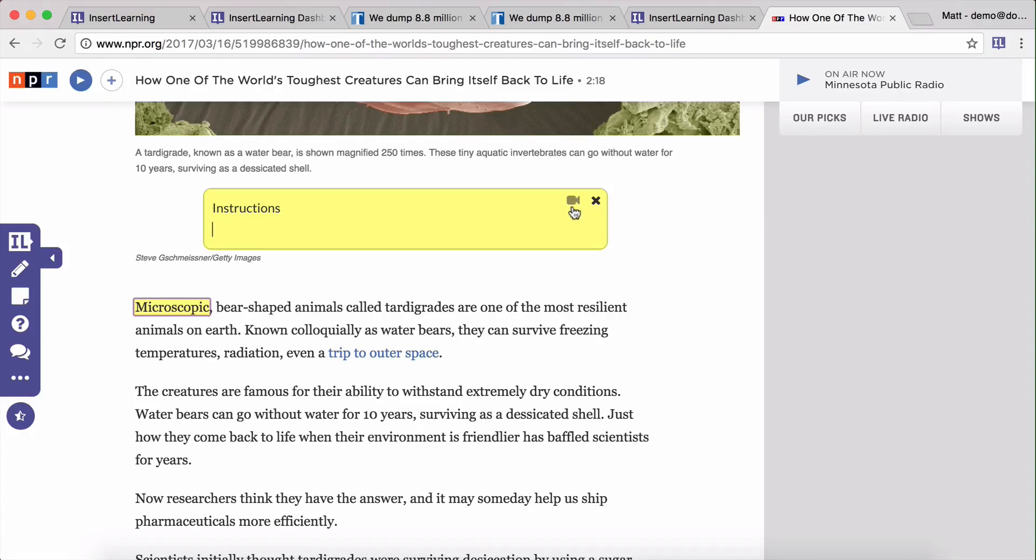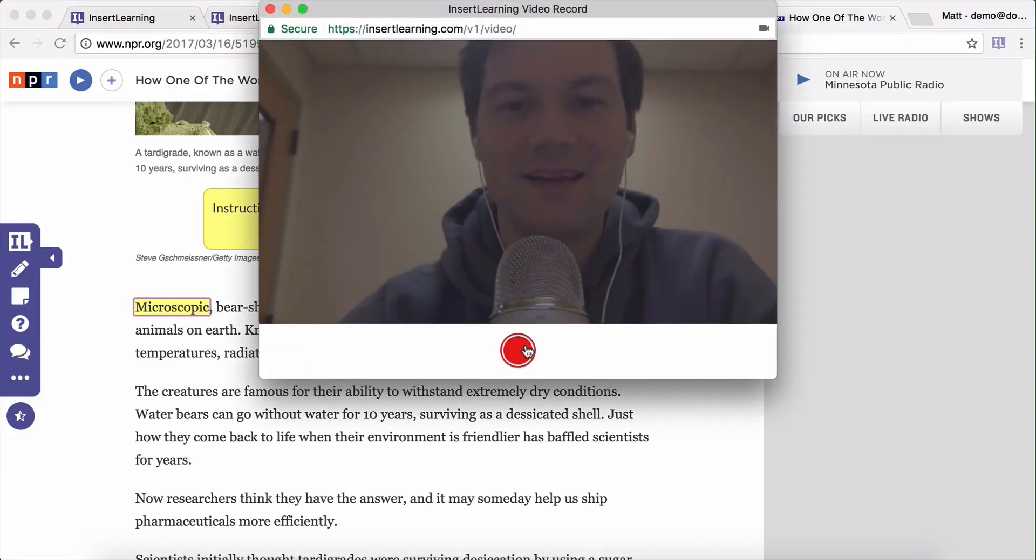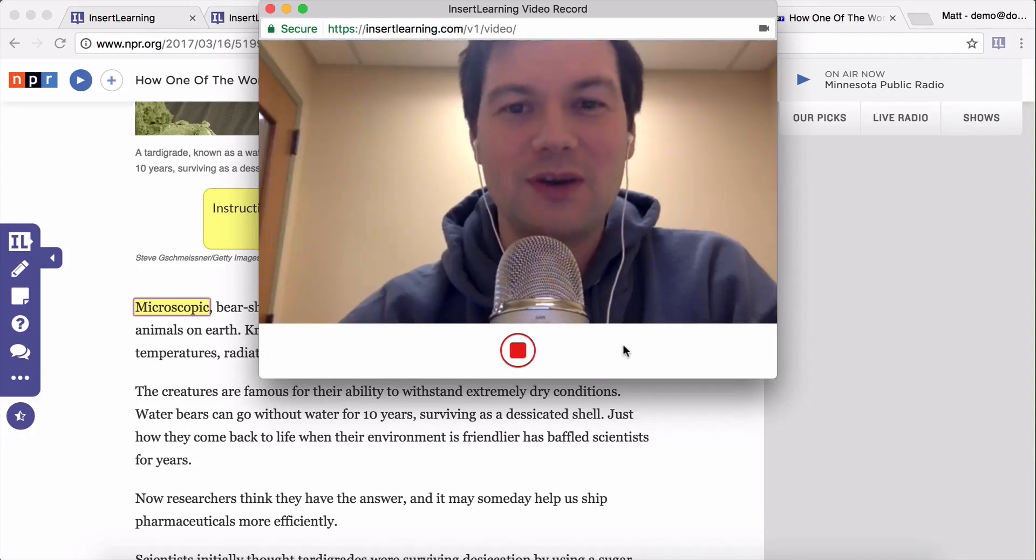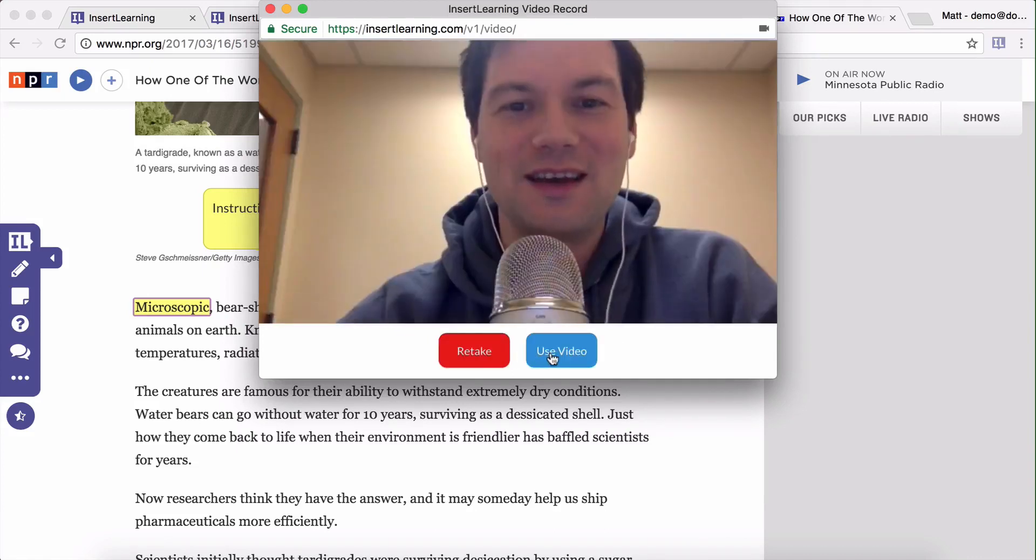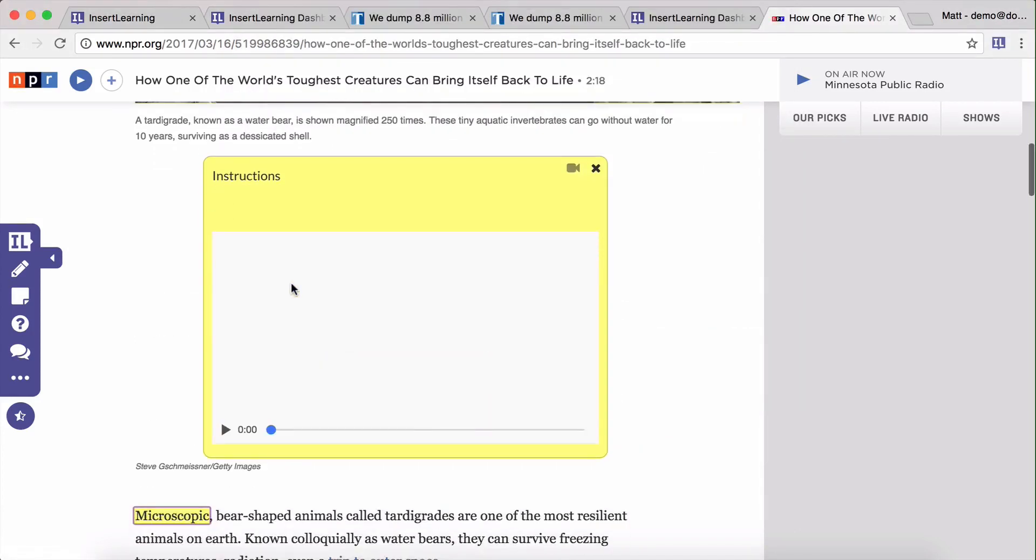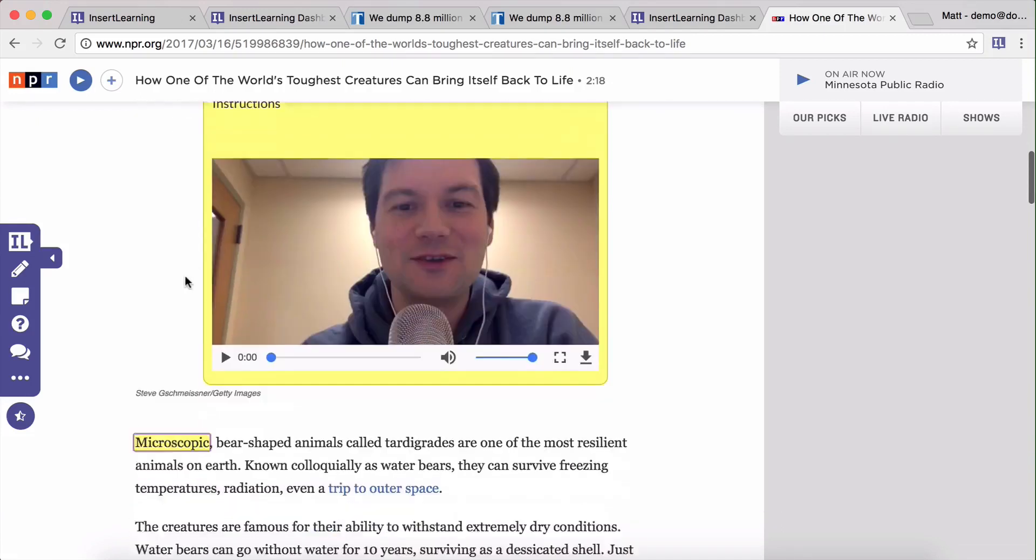But for this one, I'm actually going to record a video, giving them instructions. Click on the video icon, and then there's me. All right, students. So I want you to read through this lesson, answer all the questions, and don't worry. All of your responses are going to auto-save. I'm going to click on use video, and there it is. So now when students get there, they're going to be able to watch that video, and I can type in some instructions as well.